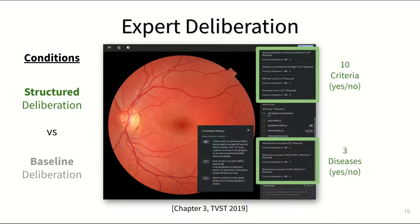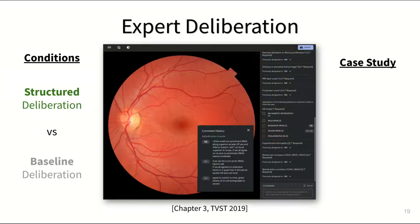And by differentiating from three other types of eye disease which can resemble diabetic eye disease in some cases. We visualized disagreements over each of these additional criteria throughout each deliberation round.